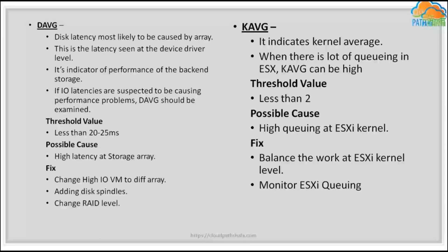For high latency issues, look at DAVG. These are the commands the VM kernel has passed on to the array, but the array is not processing those requests in time, creating a bottleneck. Commands sent to the array are not being processed on time — a delay of 20 to 25 milliseconds indicates latency you need to check.